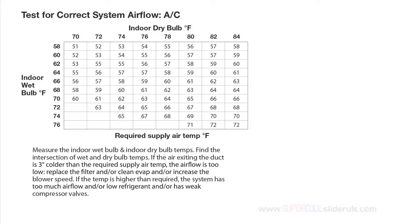I assume you have performed the test for correct system airflow and the results were lower than the chart specified. If not, watch the tutorial titled 'How to Calculate Correct System Airflow Through an Air Conditioner.' If the delta T is too low, the primary causes are as follows.